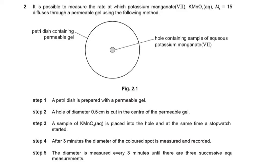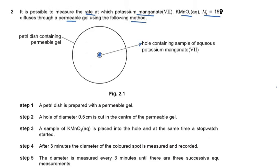Let's start with question 2, which says it is possible to measure the rate at which potassium manganate 7 (KMnO4, molecular mass 158) diffuses through a permeable gel using the following method. There is a petri dish containing permeable gel with a hole at the center, and this hole contains an aqueous potassium manganate 7 sample. You can pause the video to read the steps given.